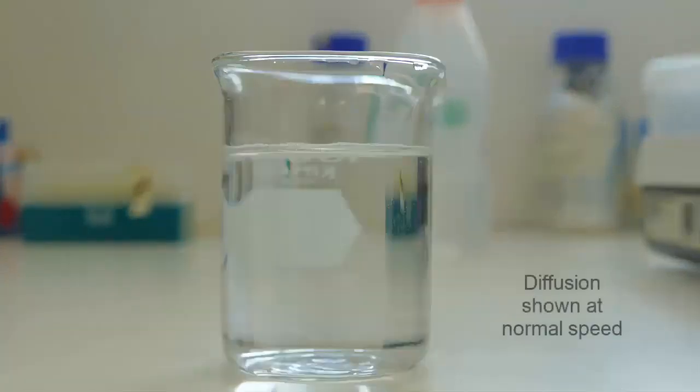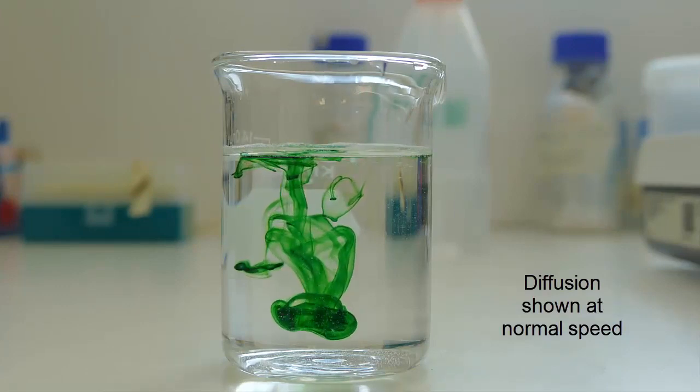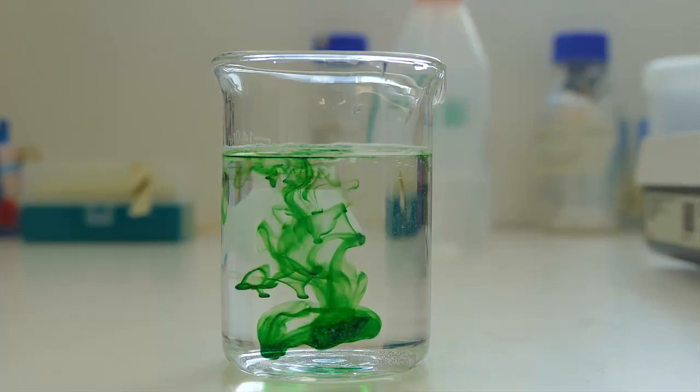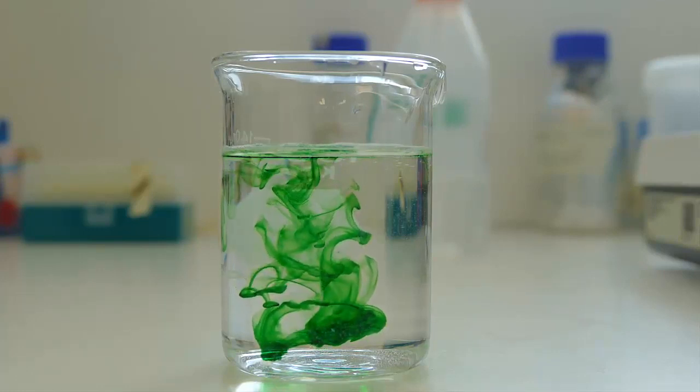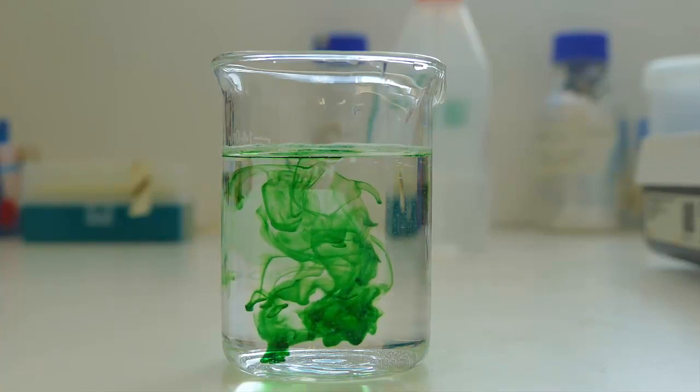For example, the molecules of this dye that we dropped into a beaker of water start off close together and then they diffuse through the water which means that they move apart from each other towards areas of the beaker that are lower in dye concentration.